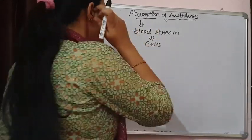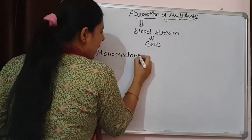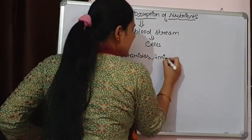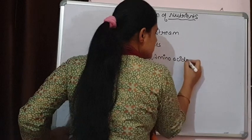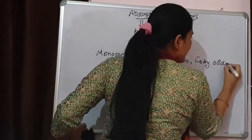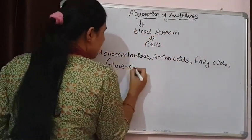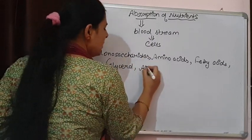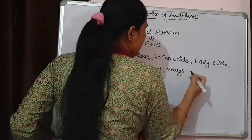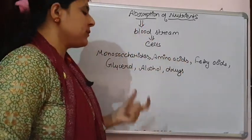Absorption basically takes place of monosaccharides. After digestion of carbohydrates we have got various monosaccharides. Digestion of protein has given us amino acids. There are fatty acids and glycerol obtained from the digestion of fats. Then there is glycerol, alcohol, and some drugs. So all these substances are going to be absorbed.